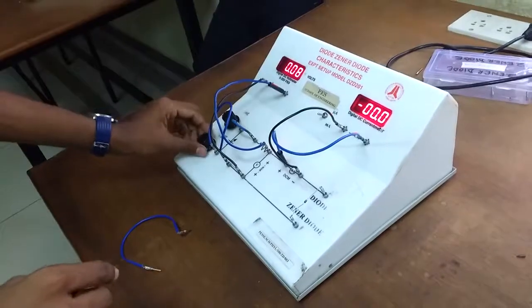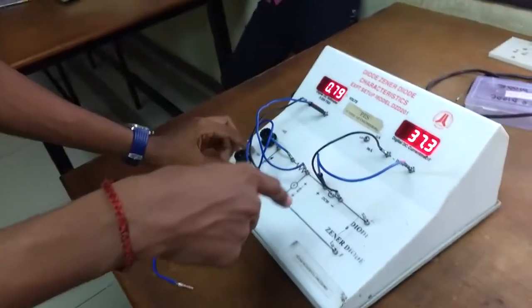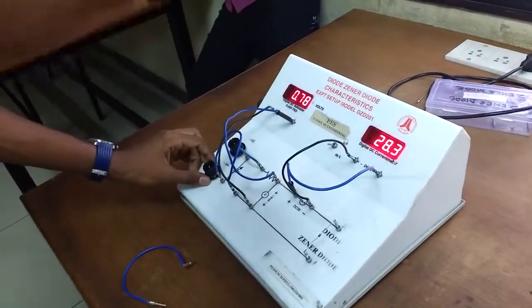This is the milliamps. This is the variable. The forward bias is milliamps. Yes, milliamps. Reverse bias is microamps.